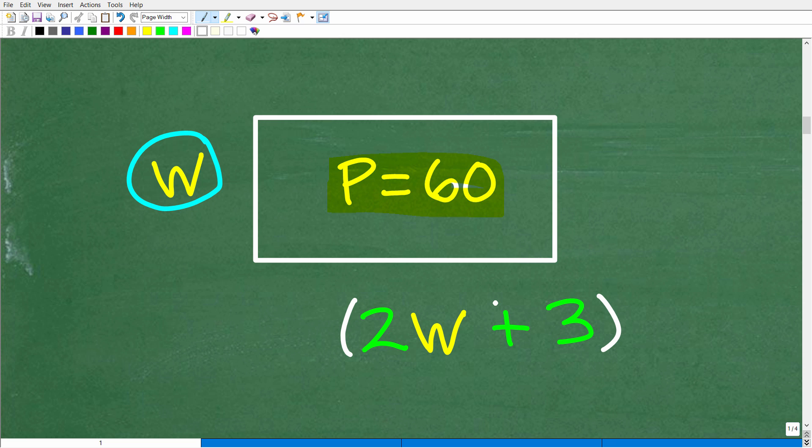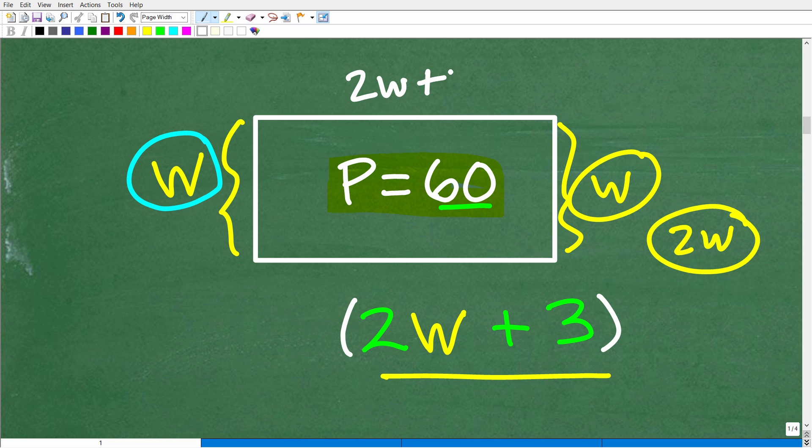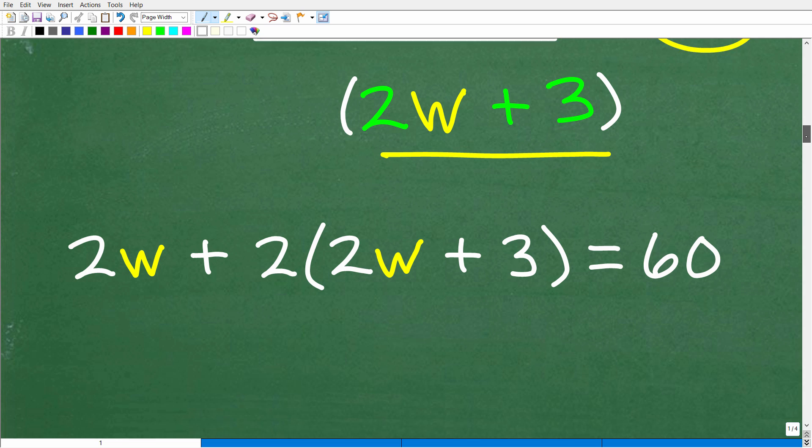The information we need here to build an equation has to do with the perimeter. We know that if we add all four sides up around this rectangle, the answer is going to be 60. It's going to be equal to 60. So that's exactly what we're going to do. We have the width right here. This is the width as well. So how many W's do we have? We have two W's. And then I have 2W plus 3. So this is also 2W plus 3. So two of these plus two of the W's is equal to the perimeter, which is 60.